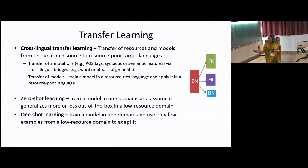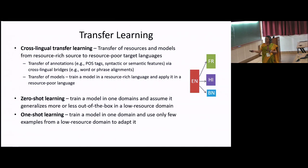Specifically, we have seen zero-shot learning and one-shot learning. Zero-shot learning means training a model in one domain and assuming it generalizes out of the box in a low-resource domain, even without a single data point in the target domain. One-shot learning is where you train a model in one domain and use only a few examples from the low-resource domain to make it work. In some tasks, zero-shot and one-shot learning have become a reality.